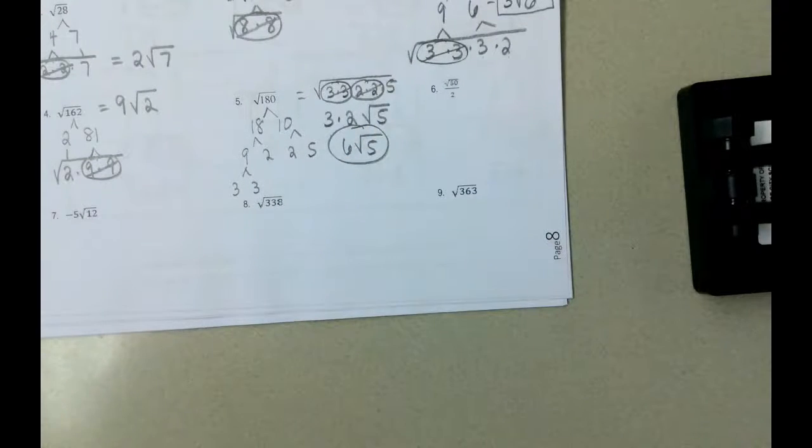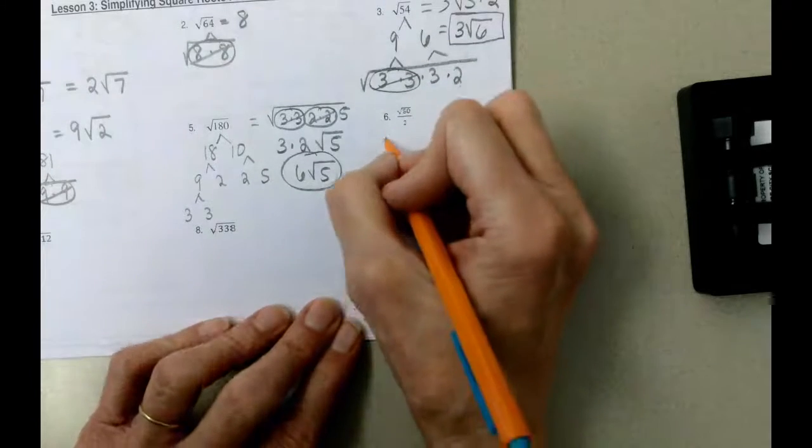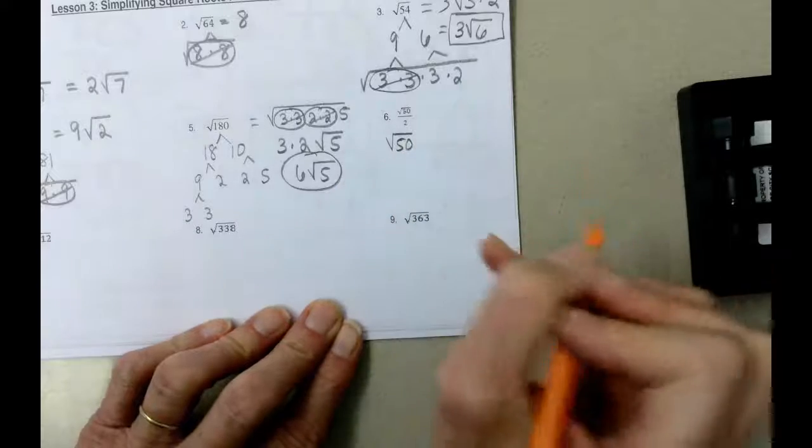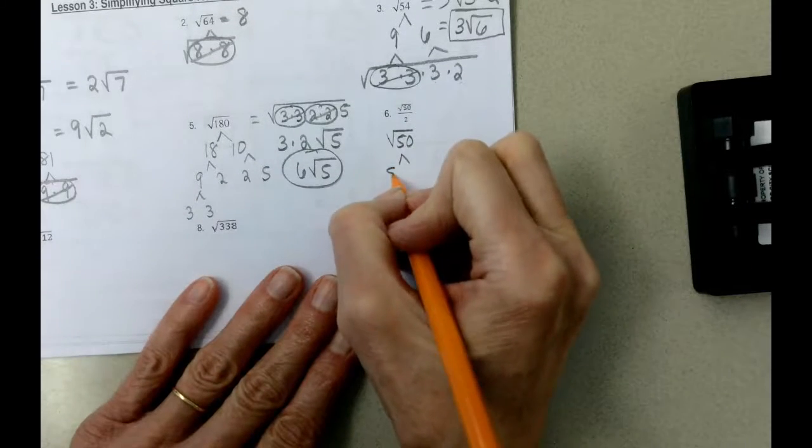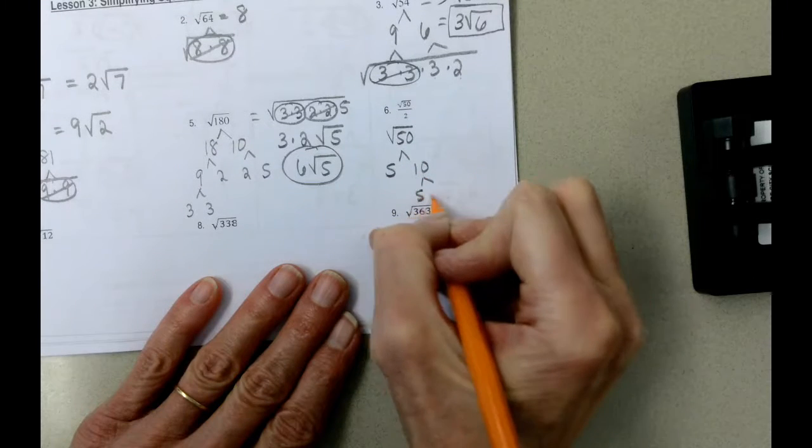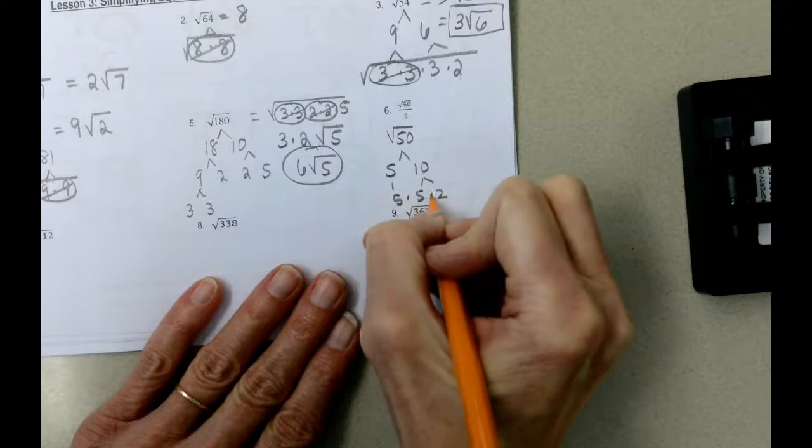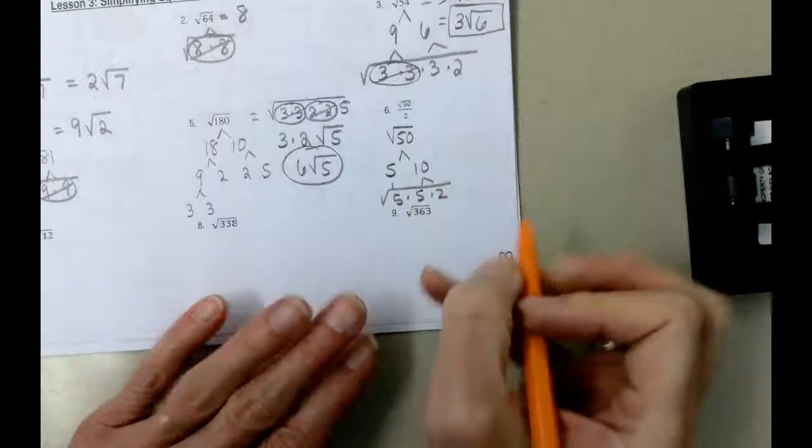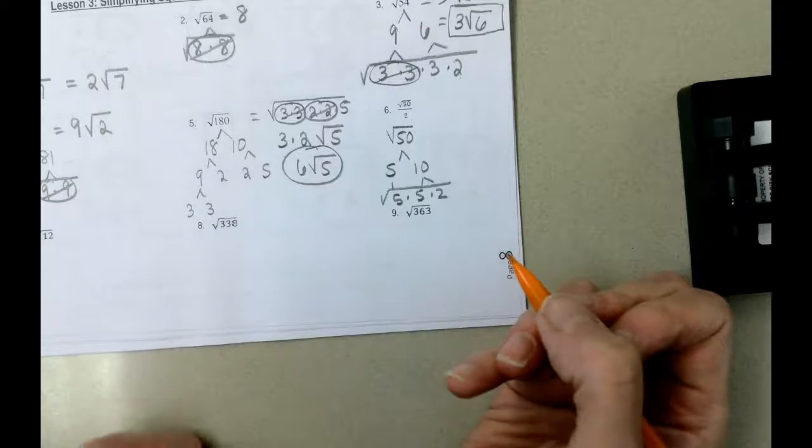When we look at problem number 6, the square root of 50 divided by 2, let's just simplify the square root of 50, and then we can deal with the fraction part of it. 50 is 5 times 10, it's 25 times 2. It does not matter what you pick, because you're looking for the prime numbers. 5 times 5 times 2 is what the square root of 50, or 5 times 5 times 2 is 50.